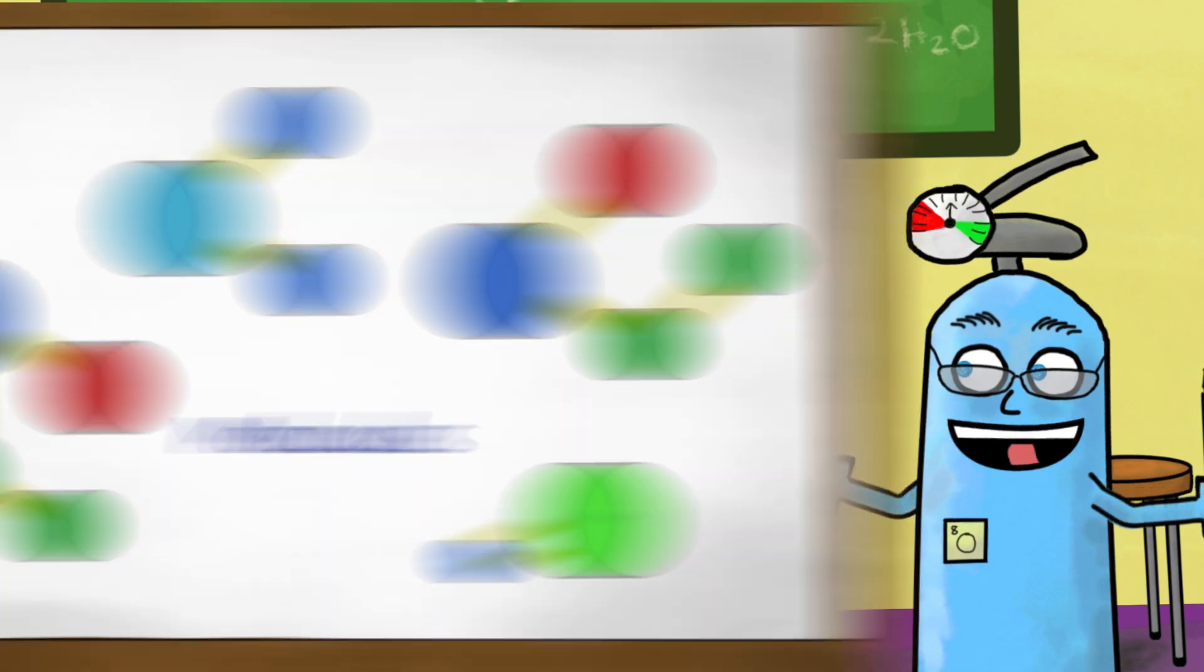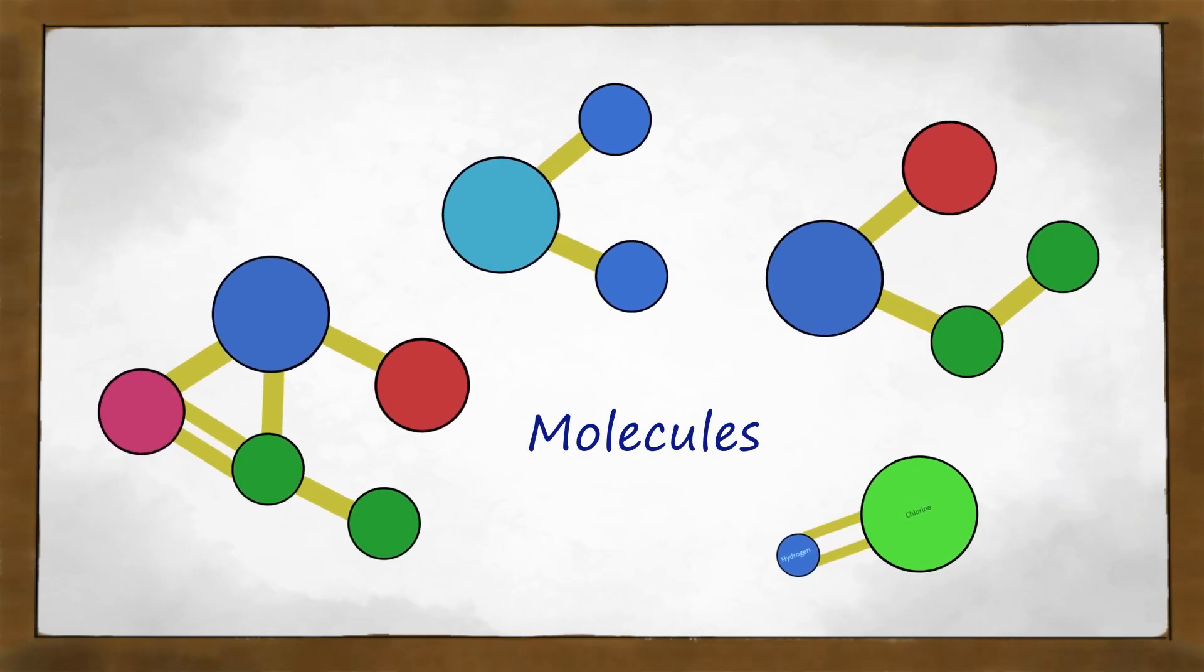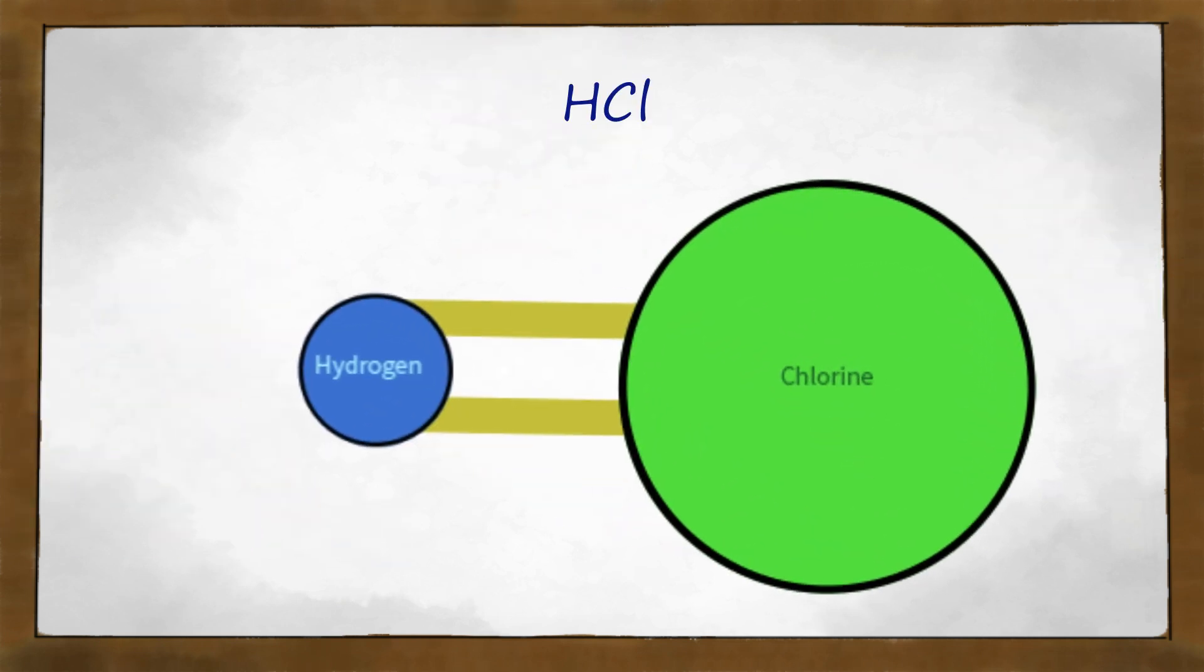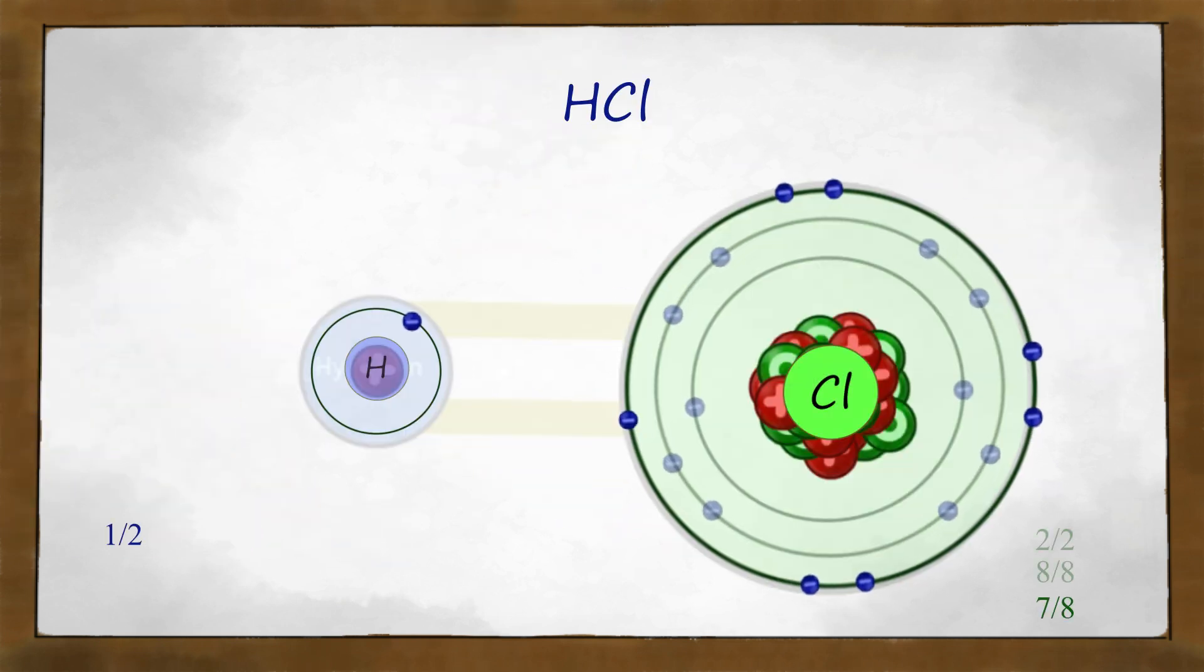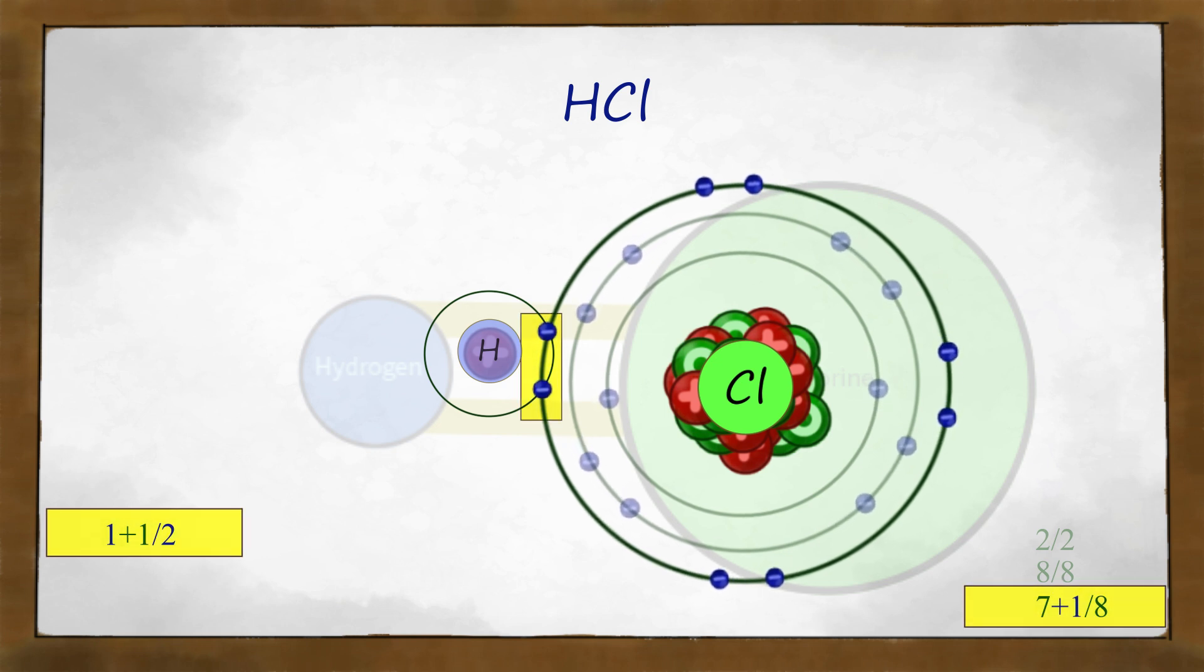Molecules? A molecule is a collection of atoms that form covalent bonds. Covalent? Yes. A covalent bond is one where two atoms share their electrons instead of giving them up. As you can see here, chlorine contributes an electron and so does hydrogen. This results in both of them gaining a charge and filling their outer shells.